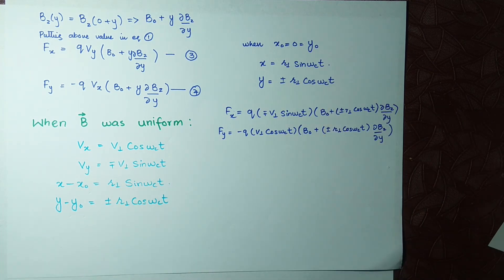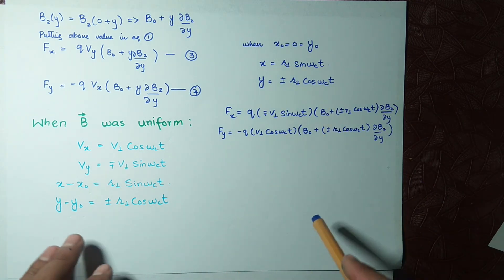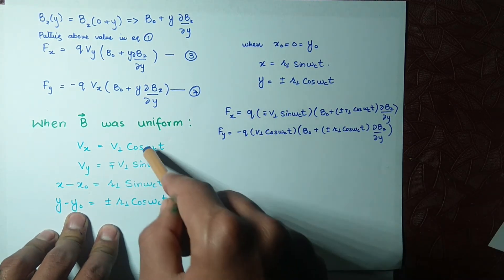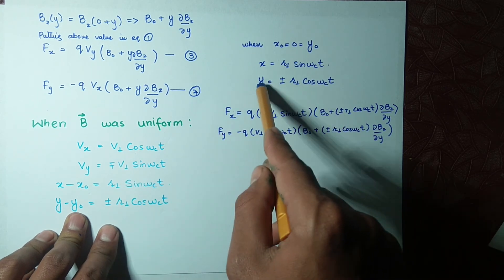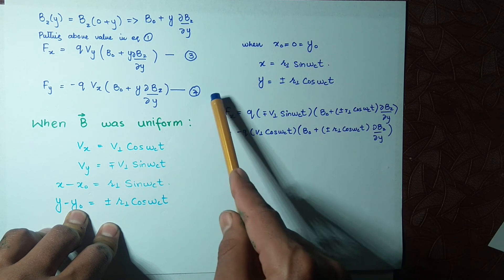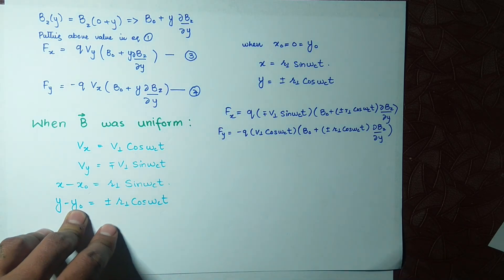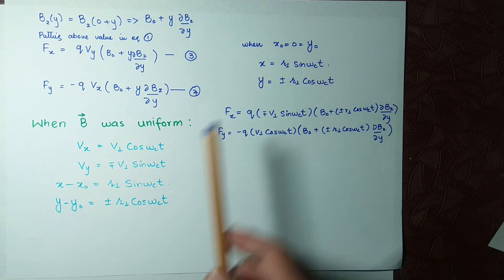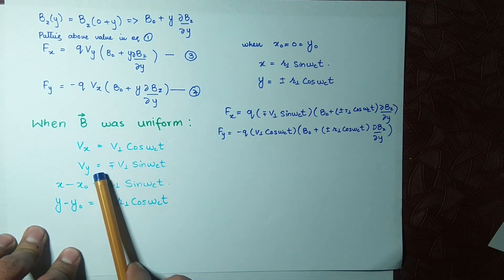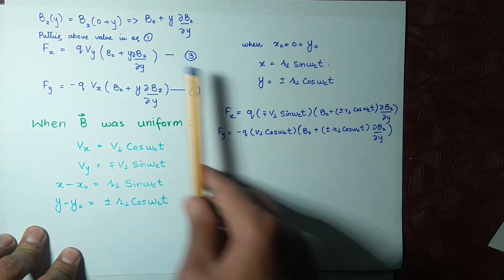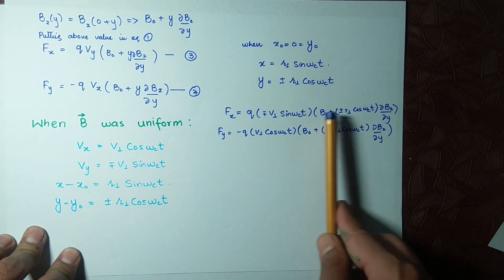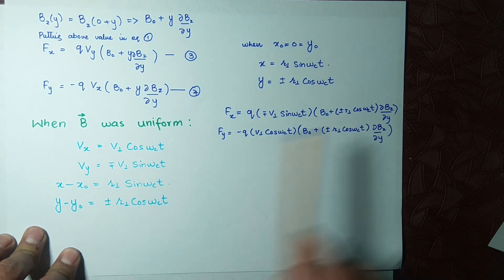Now, putting all these values — including y = ±r⊥ cos(ωct) — into Equations 3 and 4, we obtain vy and the corresponding expressions. So we will have these two resulting equations.